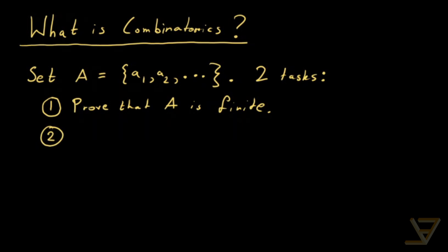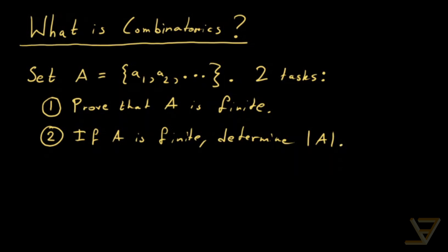And I'll explain what exactly I mean by finite in a moment. And secondly, if A is finite, determine the cardinality of A, which we denote by absolute values. And I'll define cardinality in just a second as well.